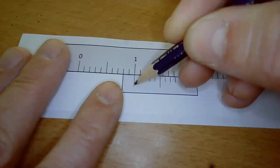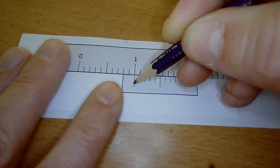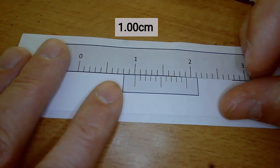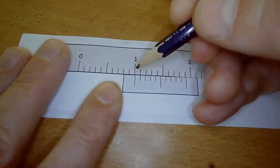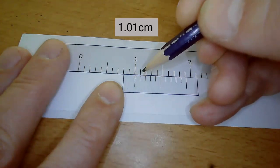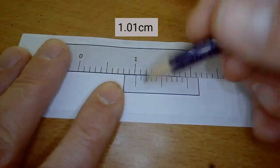Moving it slightly, it's now 1.01. Move it further and the next mark lines up, so it's 1.02. Every time we move this along,